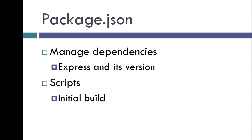When we are working on a project, we are going to include a file called package.json in our project folder. Using a package.json file has two main benefits. The first is that it lets you manage the dependencies of your project. For example, if I'm working on a Node project that makes use of the Express framework, I can specify the Express package and the version of Express that my project depends on. The second thing is that it lets you add scripts that help with the initial build of your project.